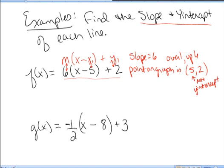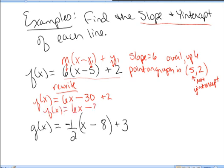One way we could find the y-intercept is to rewrite this formula. We could distribute the 6, and we get 6x - 30 + 2. And so f(x) = 6x - 28. Notice by rewriting it this way, it now looks like mx + b. And so this number b is -28. So the y-intercept is (0, -28).